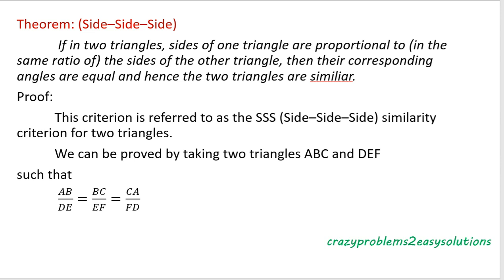So the given condition is: the sides of one triangle are proportional — proportional means in the same ratio — to the sides of another triangle. We have to prove that all corresponding angles are equal, and hence the triangles are similar by the similarity definition. This criterion is referred to as the Side-Side-Side (SSS) similarity criterion for two triangles.